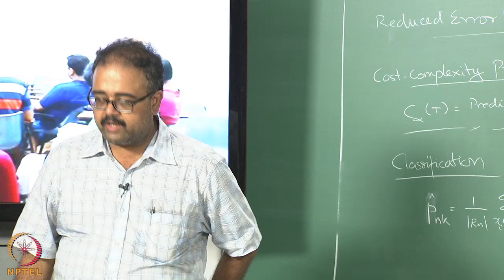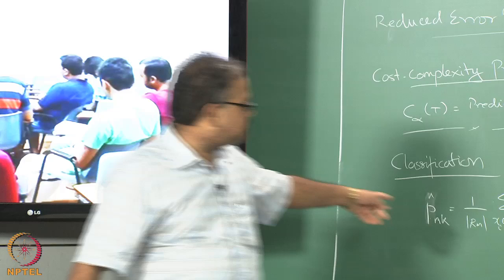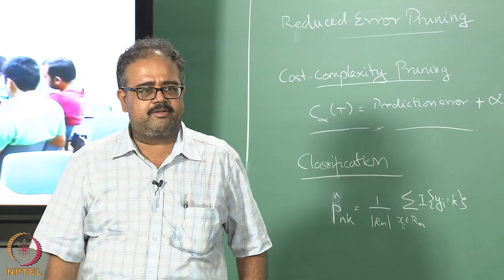I look at the probability of a data point in region M belonging to class K, which is P_MK. You estimate that by just counting the number of data points of class K in region M and dividing by the total number of data points. This is how I do the prediction.